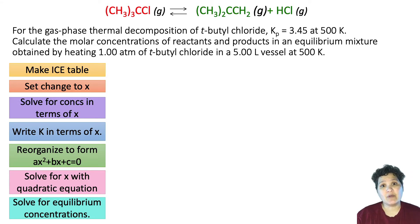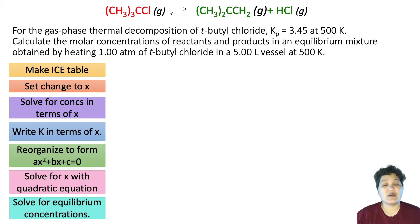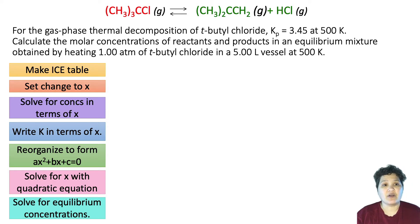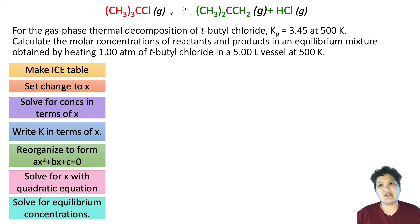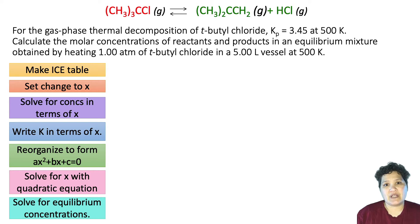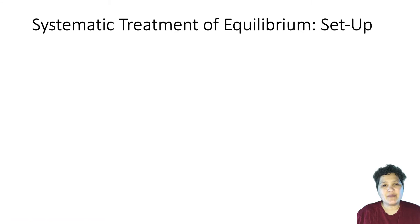If you look more closely at this problem, you'll notice it's a gas phase problem where we set up a system, put the reactants into a sealed container, let it go, and figure out what the concentrations are when they stop changing. This is a very tightly controlled system, and the problem is that in a lot of real world chemistry, most systems aren't as tightly controlled.